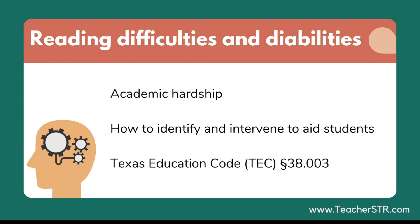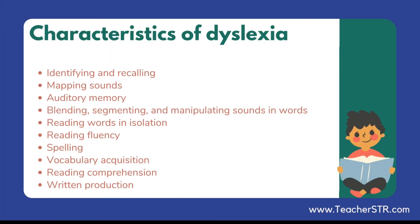The Texas Education Code defines dyslexia in the following way: dyslexia means a disorder of constitutional origin manifested by a difficulty in learning to read, write, or spell, despite conventional instruction, adequate intelligence, and sociocultural opportunity. Characteristics of dyslexia include difficulties with identifying and recalling the names of alphabet letters, numbers, and familiar objects; mapping sounds to letters; auditory memory for rhymes, songs, and chants; blending, segmenting,